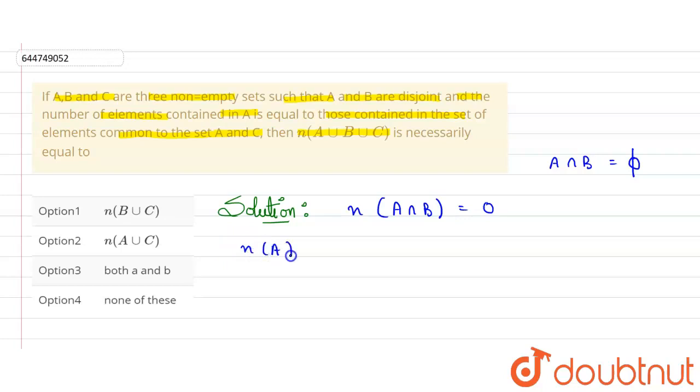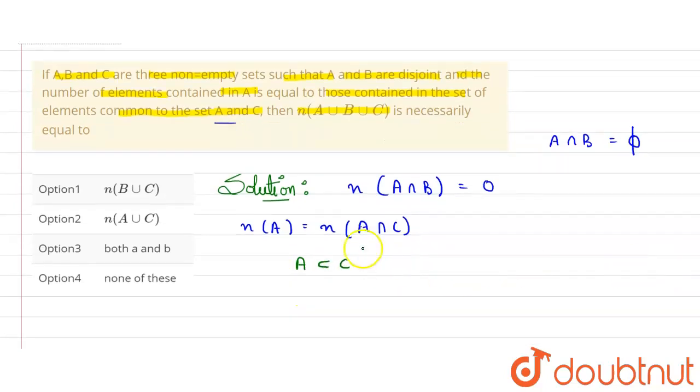Now it is also given that number of elements in A is equal to number of elements common to set A and C. Common means intersection. So what does this land represent? It represents that if I will take common number of elements in A and C, then it will be equal to number of elements in A. So it represents that A is a subset of C. C will contain all the elements of A, it is obvious fact.